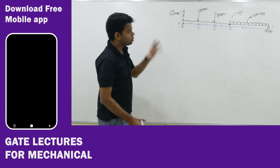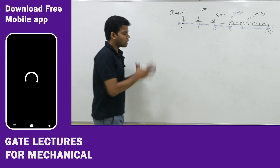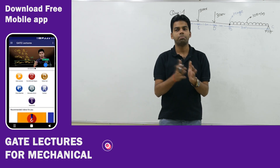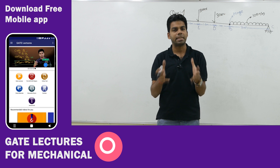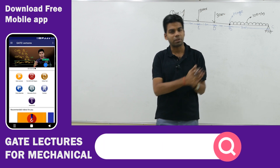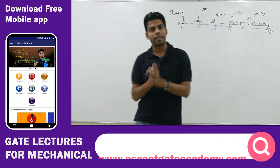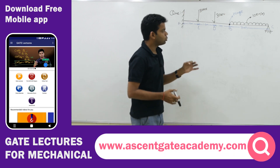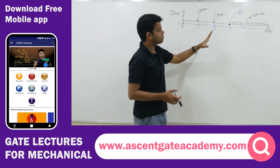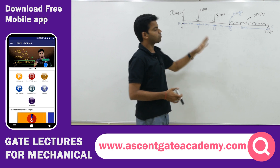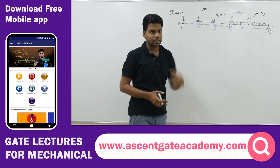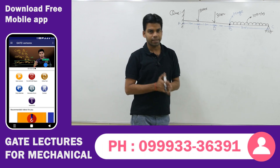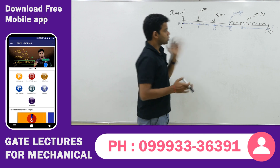Now, how to solve such questions — how to draw the shear force and bending moment diagram for a beam which has an internal hinge. Whenever you have an internal hinge, what you have to do is separate the beam from the internal hinge — divide it into two parts.